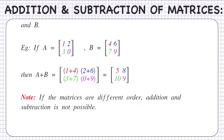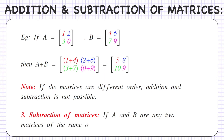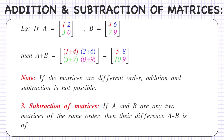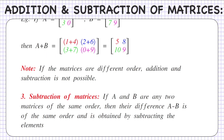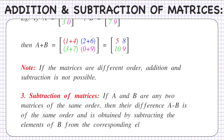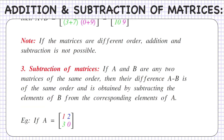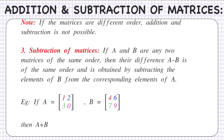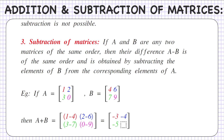Third: subtraction of matrices. If A and B are any two matrices of the same order, then their difference A-B is of the same order and is obtained by subtracting the elements of B from the corresponding elements of A. Using the previous example where A was [1, 2, 3, 0] and B was [4, 6, 7, 9], A-B equals [1-4, 2-6, 3-7, 0-9] which gives [-3, -4, -5, -9].